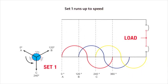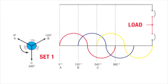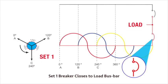Set one runs up to speed and its voltage and frequency will be the reference to synchronize with set two. After run up, set one's breaker closes to the bus.